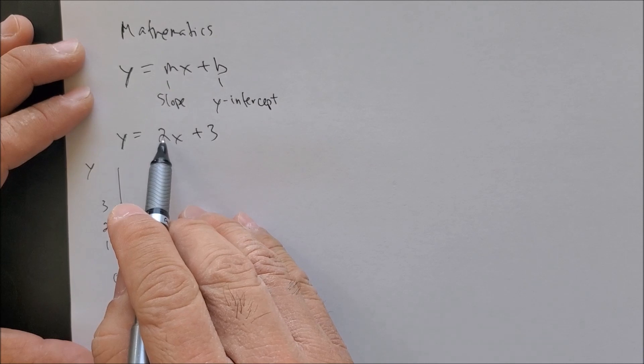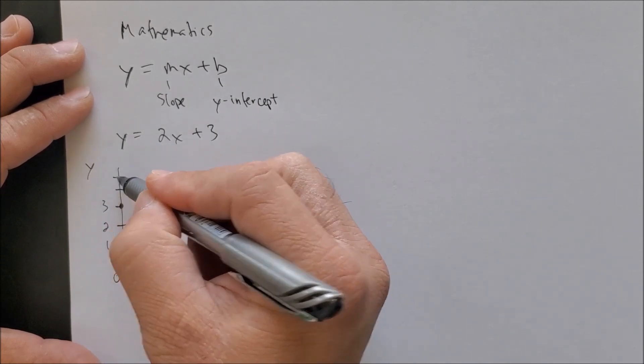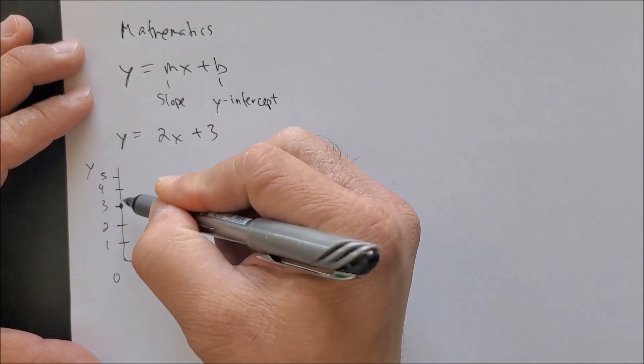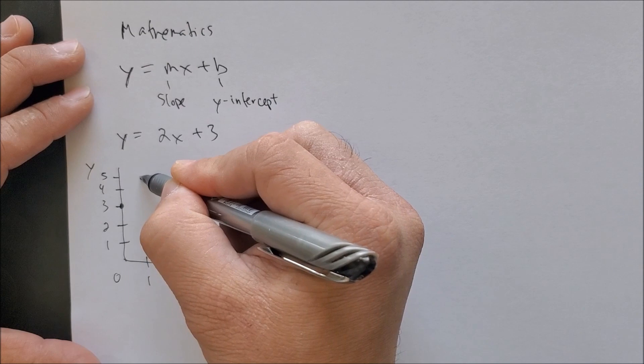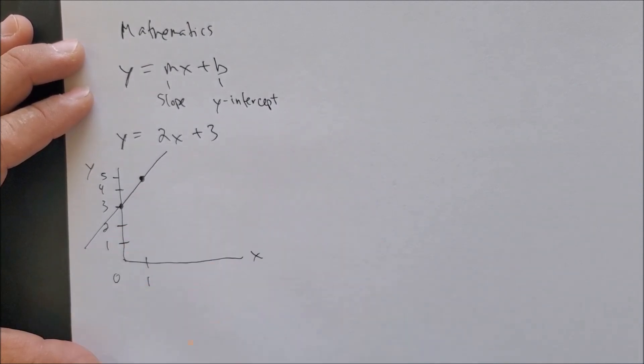rise 2 times, run to the right once. 4 and 5, 1, 2 to 1. And now we have our linear curve as such in mathematics.